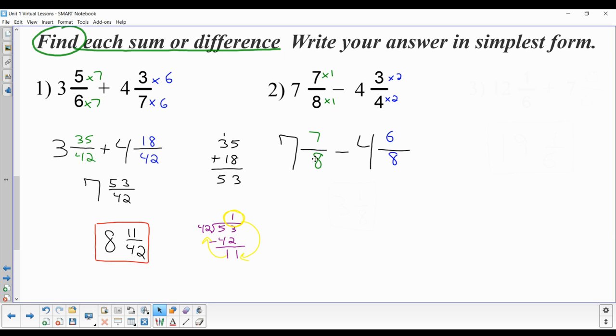And now that I have a common denominator, I can start subtracting. So the denominator is going to be an 8, and the numerator is going to be 7 minus 6. You subtract the numerator. 7 minus 6 is 1. And then subtract your whole numbers. 7 minus 4 is 3. And our answer is 3 and 1/8.